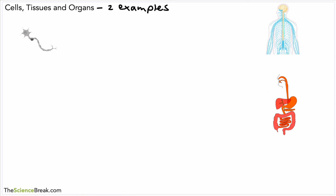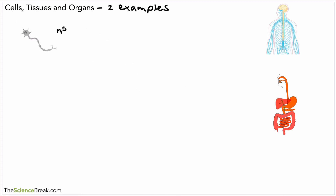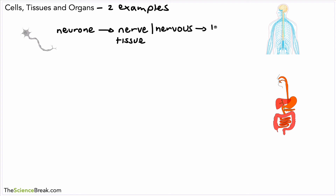Let's look at two more organ systems. Here we have what's called a neuron — sometimes called a nerve cell. It has its nucleus, cytoplasm, and cell membrane just like all other cells. When neurons join together they make what's called nerve tissue, or nervous tissue. Nervous tissue can join together to make organs, for example the brain or the spinal cord. This example of neurons joining to make nerve tissue to make organs is the nervous system — another system in the body.